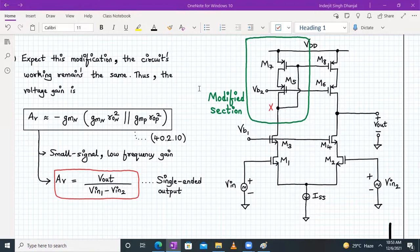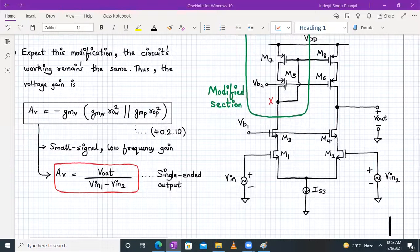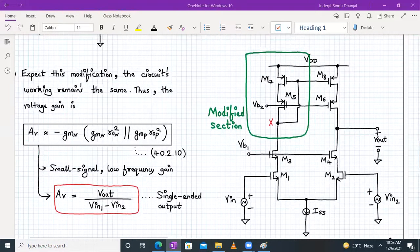The voltage gain of this modified telescopic cascode op-amp will be Av approximately equal to minus gmn times gmn times ron squared, parallel to gmp times rop squared. That's the small signal low-frequency gain. We have a single-ended output, hence gain Av is Vout divided by differential input Vin1 minus Vin2.